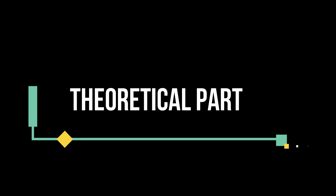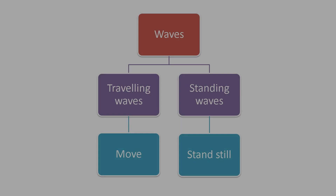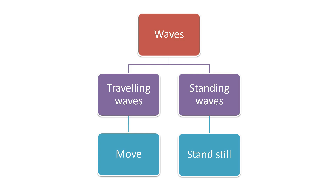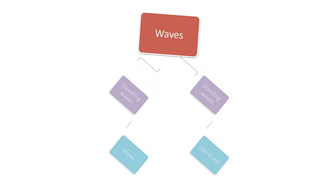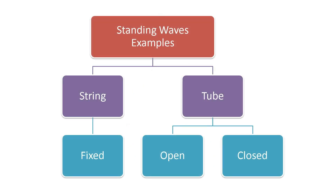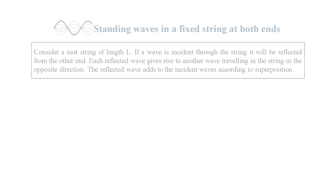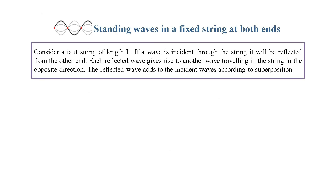Theoretical part. Waves can either be traveling waves or standing waves. Standing waves exist either in fixed strings or open and closed tubes. Consider a taut string of length L. If a wave is incident through the string, it will be reflected from the other end. Each reflected wave gives rise to another wave traveling in the string in the opposite direction. The reflected wave adds to the incident waves according to superposition.